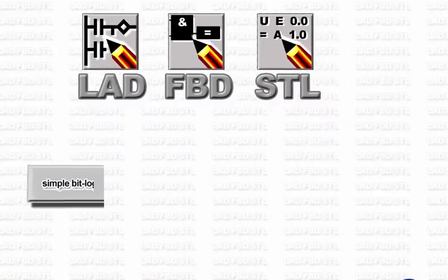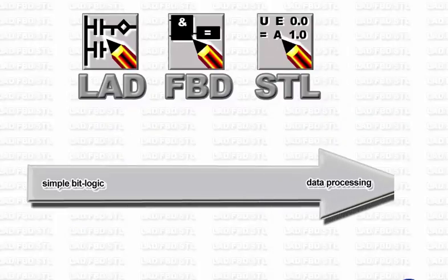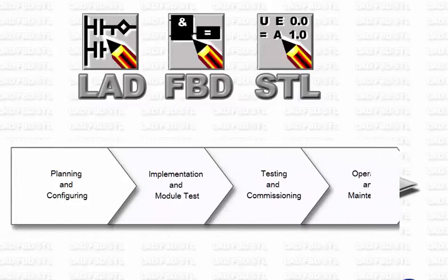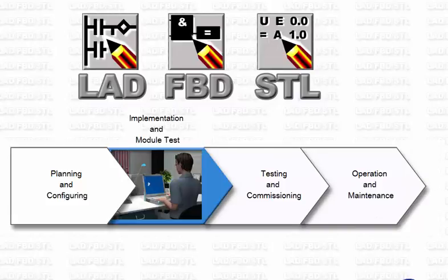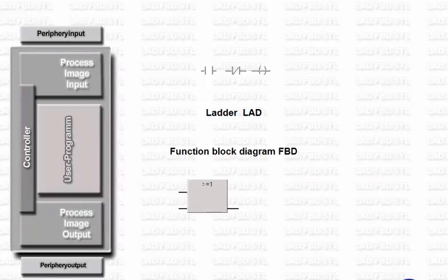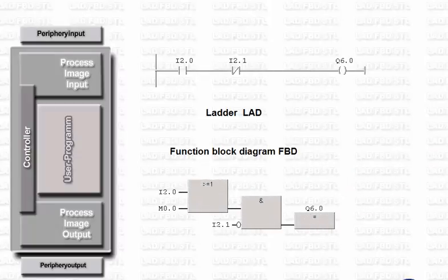Any of the three languages can be used depending on the job in hand and your personal preferences. In the overall engineering context of a machine or plant, the programming languages belong mostly to the fields of implementation and module test. For programming beginners, the two graphical languages LADDER and Function Block Diagram are the ideal basis to generate a program, because the logic can be described in the form of graphical elements and is therefore easy to understand visually.